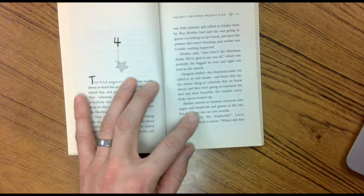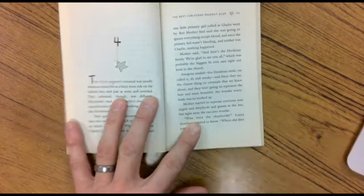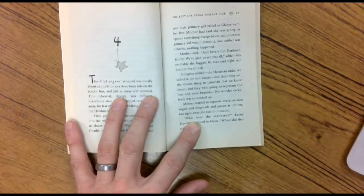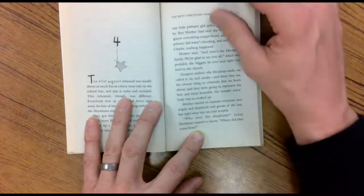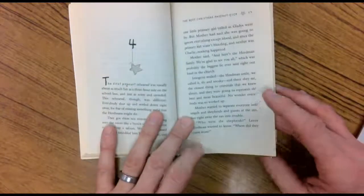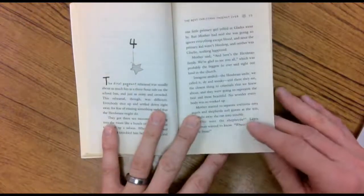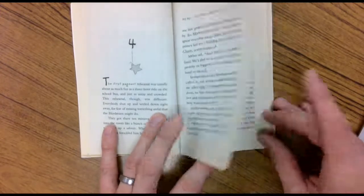Mother started to separate everyone into angels and shepherds and guests at the inn. But right away, she ran into trouble. Who were the shepherds? Leroy Herman wanted to know. Where did they come from? So now we're getting into the really good part. Remember, we here at Garden Homes, we know all about Jesus. And our job is to tell other people about Jesus. And now somebody asked. And that's our opportunity.